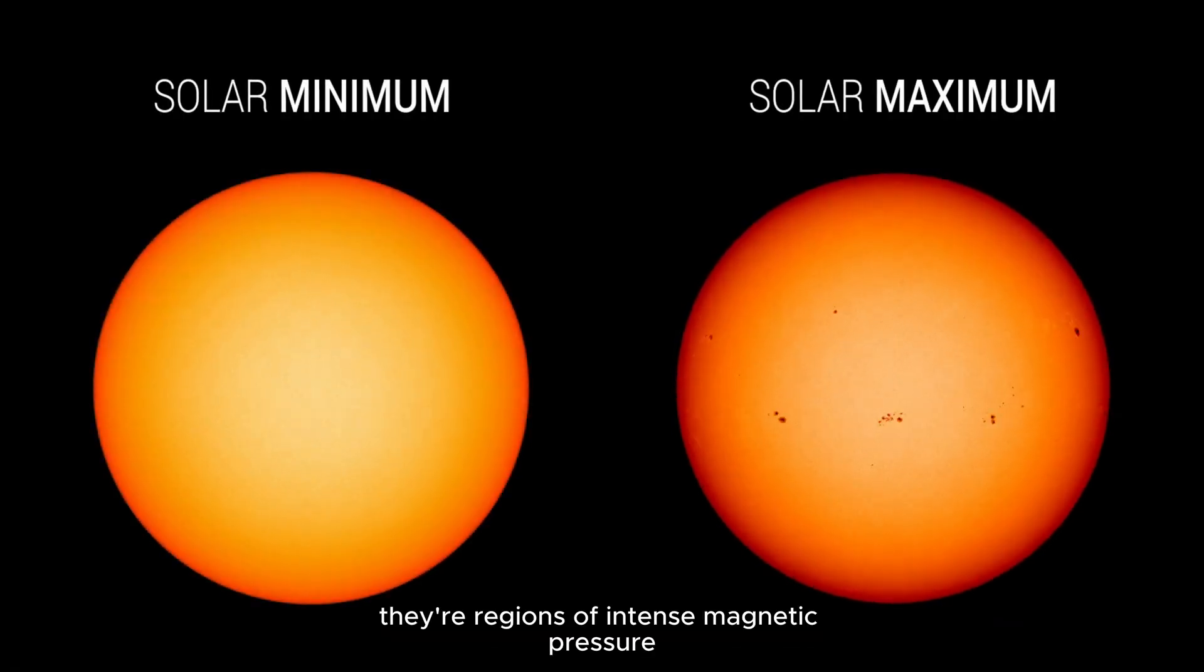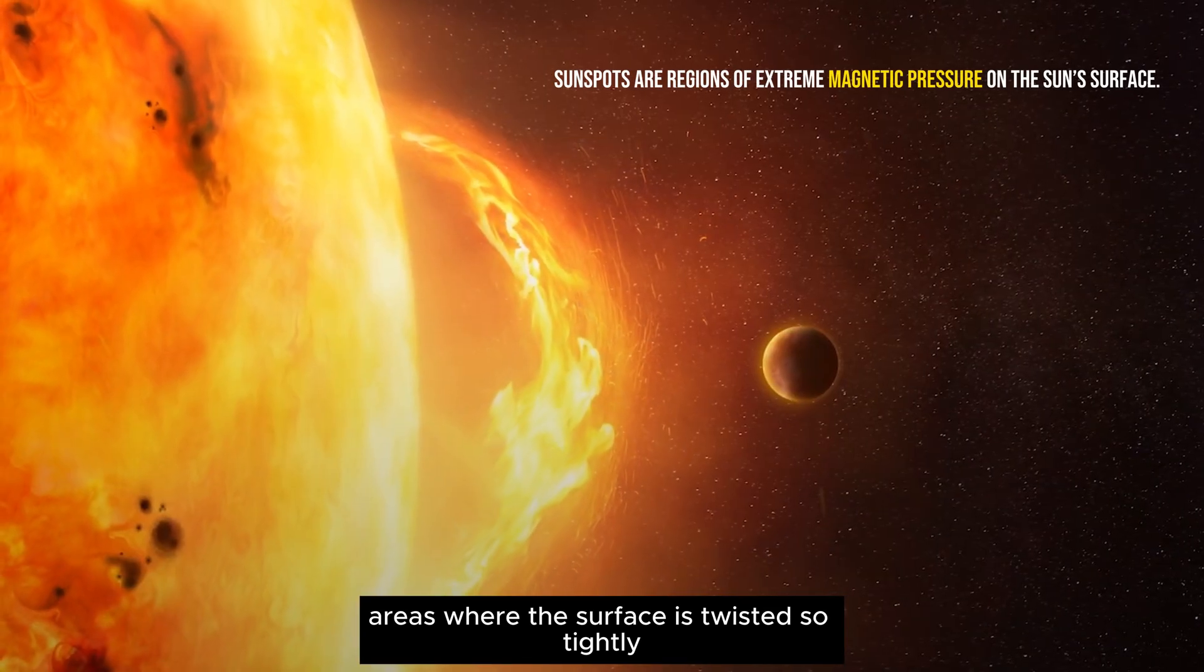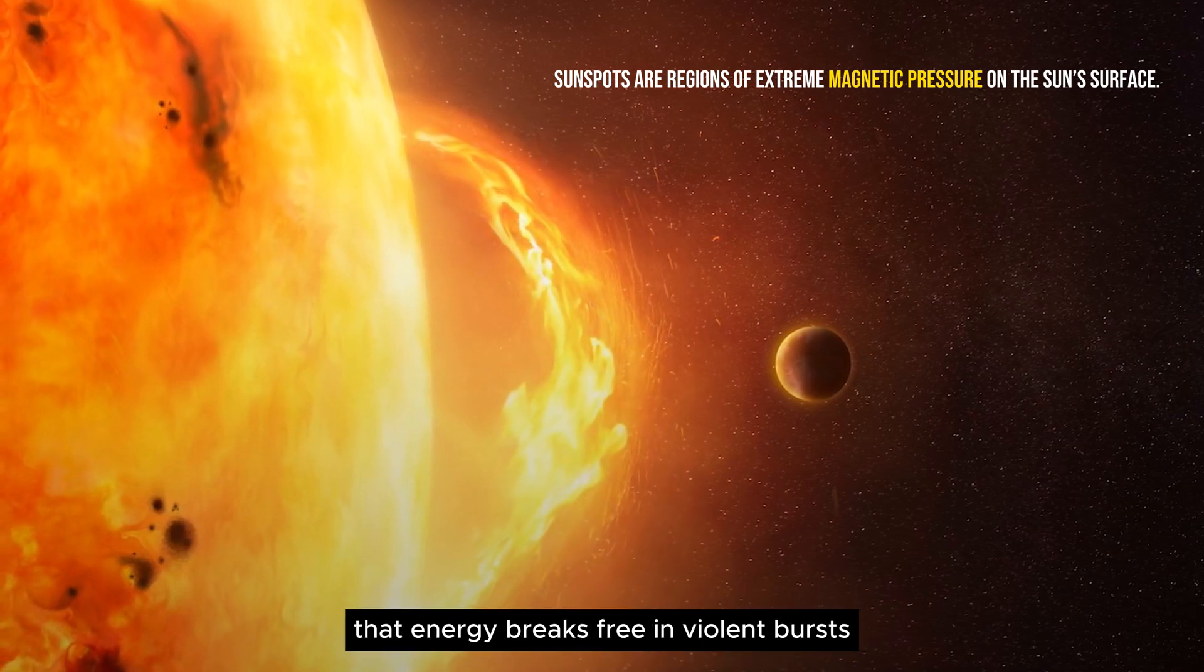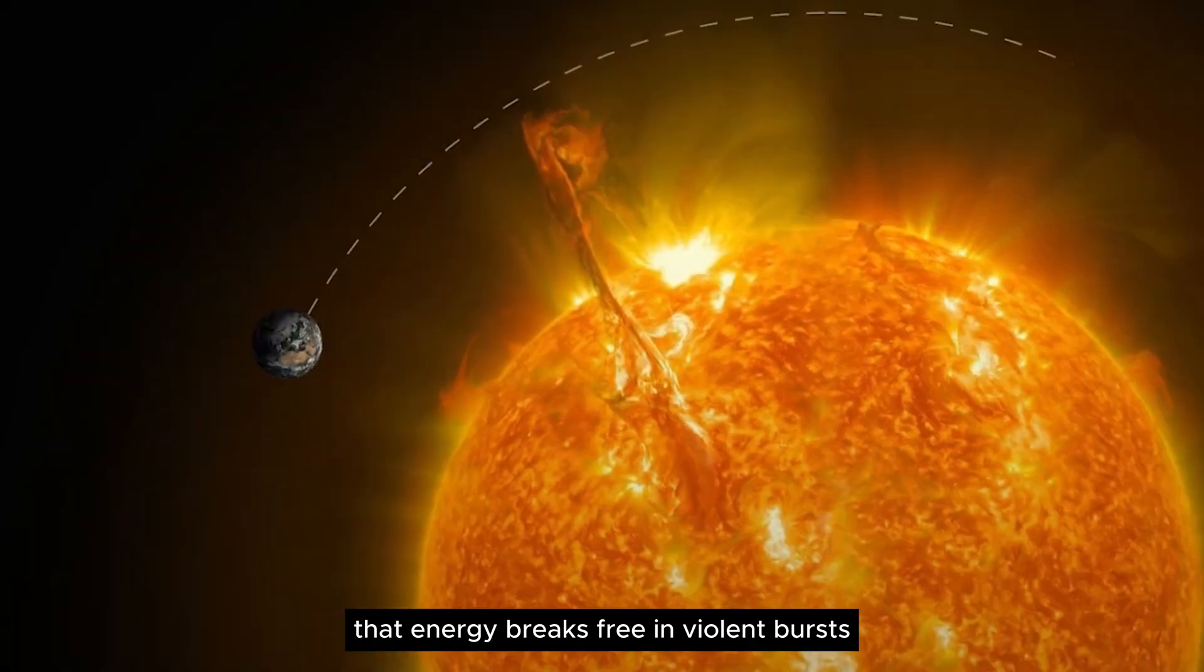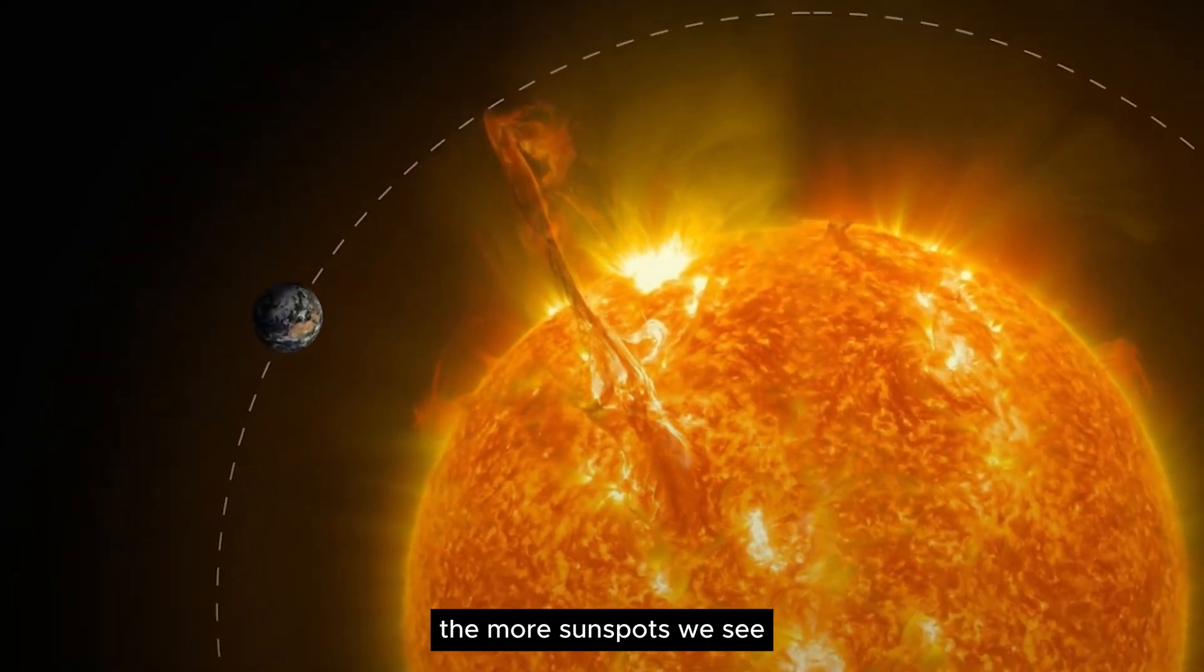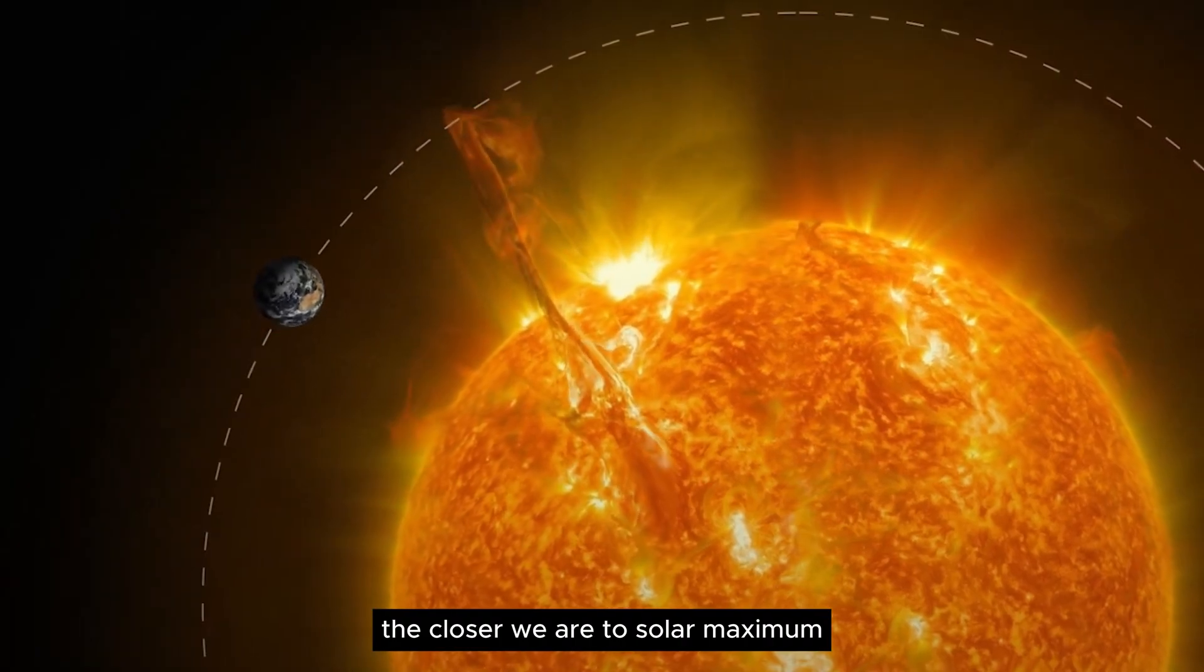Sunspots are the first warning sign. They're regions of intense magnetic pressure. Areas where the surface is twisted so tightly that energy breaks free in violent bursts. The more sunspots we see,